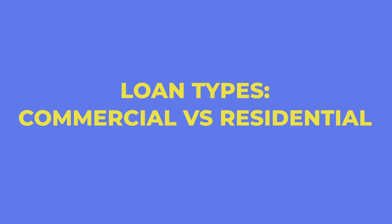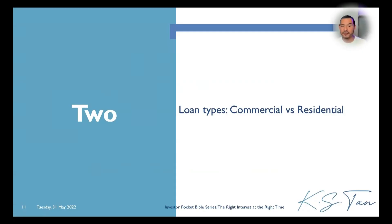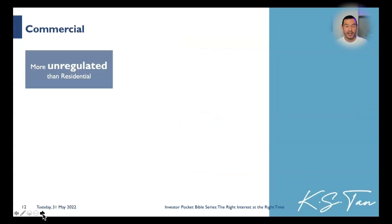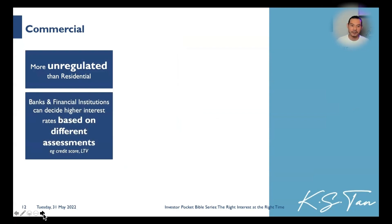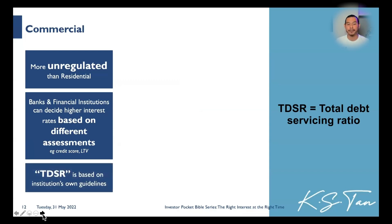Topic number two: we talk about different loan types given a commercial property purchase or a residential property purchase. Commercial loans are more unregulated than residential, and banks and financial institutions can decide to give higher interest rates based on different assessments such as the company credit score, the buyer's credit score profile, and even loan-to-value — they may also drop it as well. TDSR is also based on the bank's own guidelines, so different banks have different guidelines. There is no blanket TDSR for all banks in Singapore.